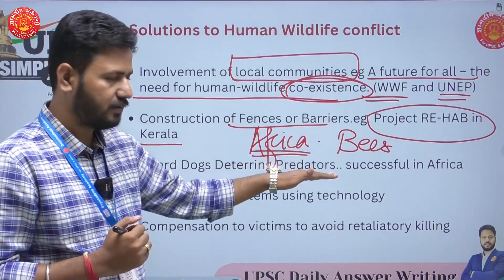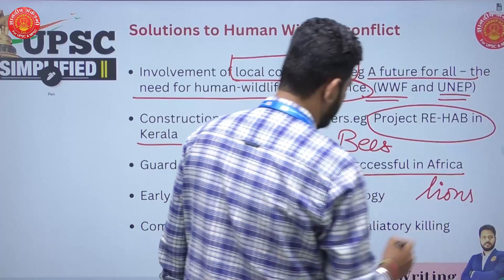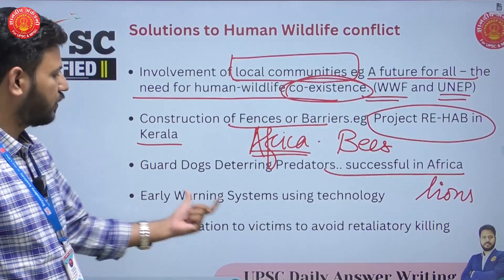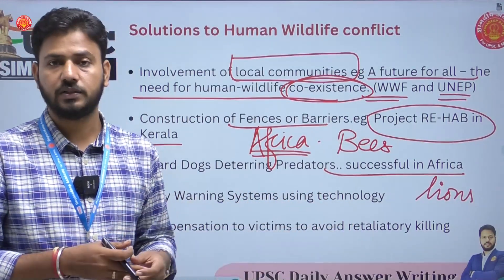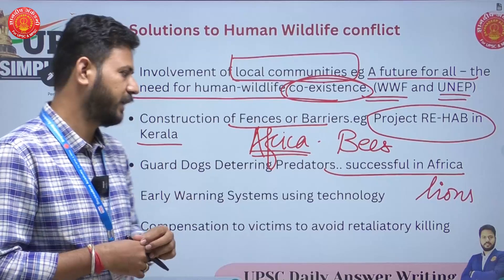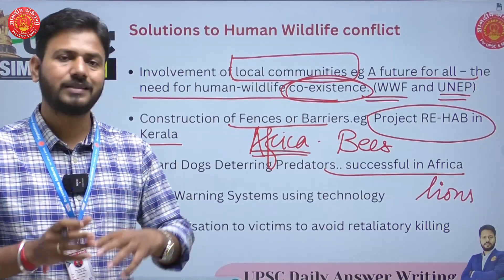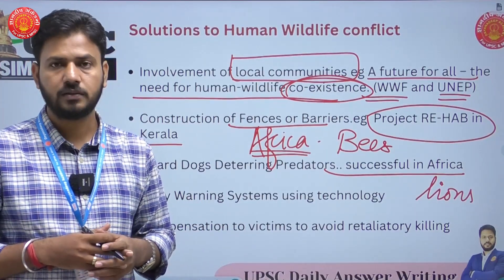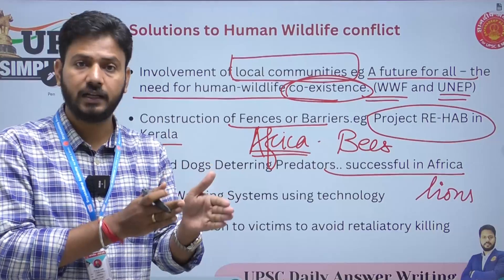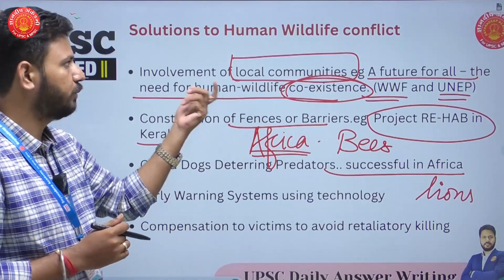Using guard dogs to deter predators is also an example, and this has been successful in Africa — saving lions there has been a very good case study. Then early warning systems using technologies: sensors and applications can alert people living around the forest about the movement of animals. Then there is compensation to victims to avoid retaliatory killings. If there is an attack on cattle, farmers or people living nearby should be compensated so that they do not retaliate and kill the animals.